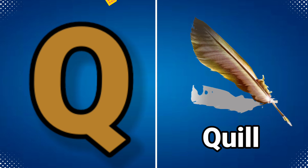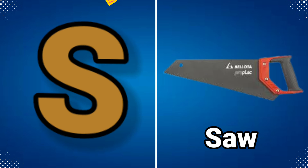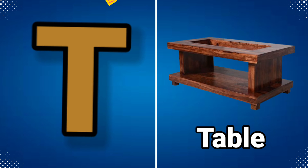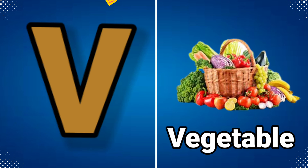Q for quill, R for rose, S for saw, T for table, U for umbrella, V for vegetable.